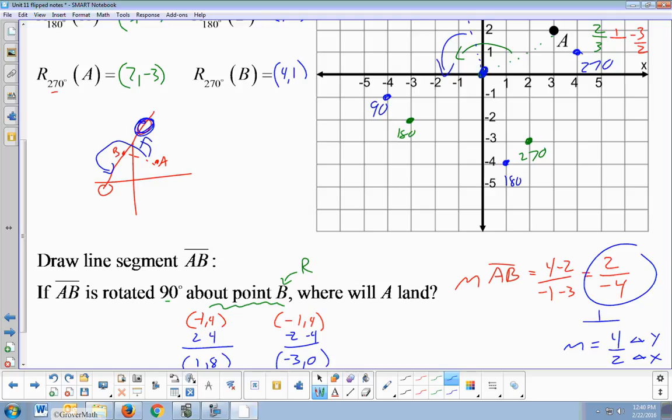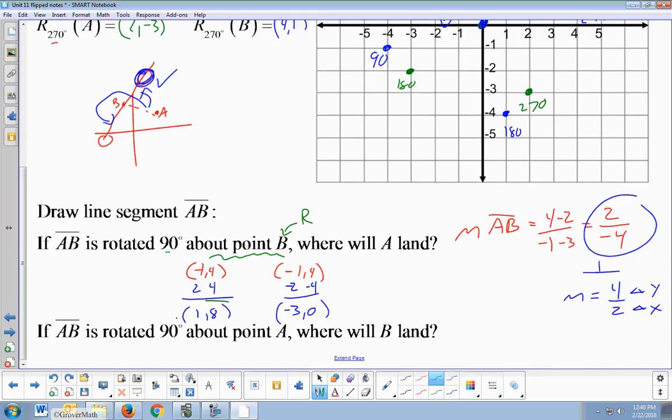So I'm looking for the point that's up here. So which one makes more sense? 1, 8 or negative 3, 0? Here's your 1, 8. Here's your negative 3, 0. It's this one up here. So that's how I know this is my answer, not that. That would be my 270 or 90 clockwise.